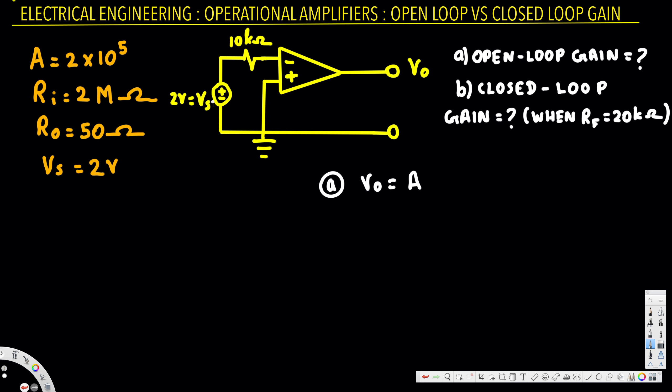In our case, the voltage source is going to be the input voltage because that's the one connected here. So this is our input voltage, and that gives us A times V_i.